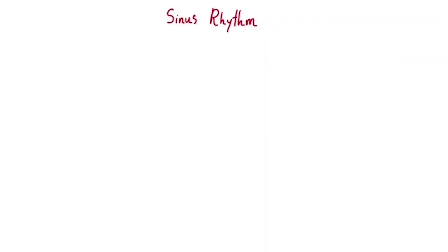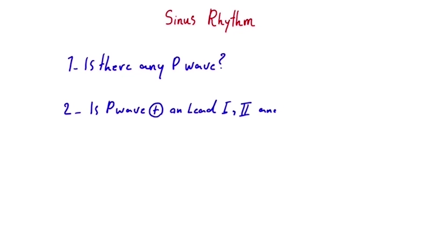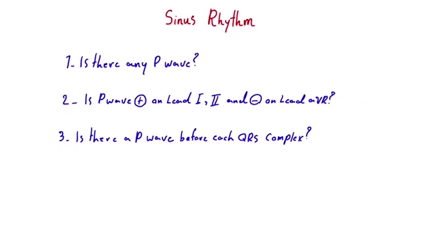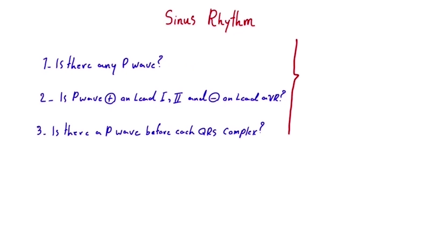When analyzing an ECG, we should begin by asking ourselves four key questions. One, do we see a P wave on the ECG? Two, is the P wave upright in leads I and II and inverted in lead AVR? Three, is there one P wave before every QRS complex? If the answer to all three of these questions is yes, then the rhythm is sinus.